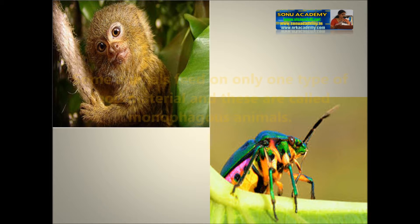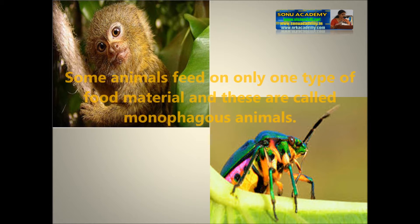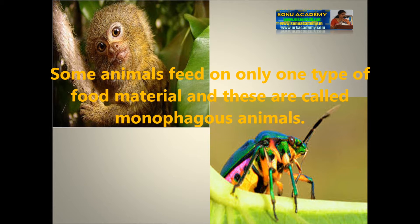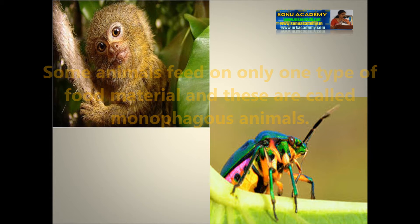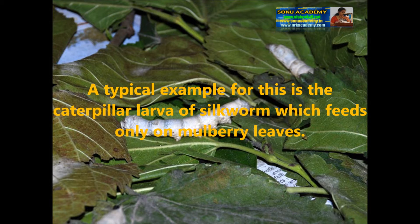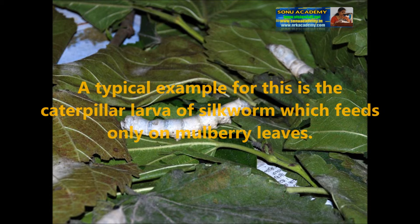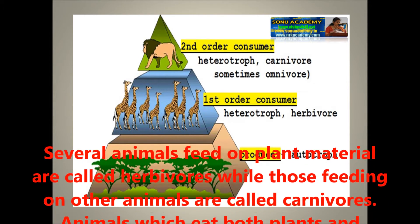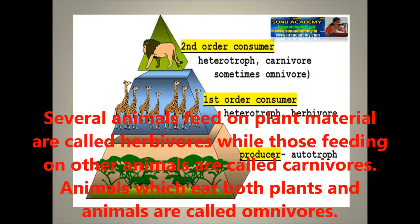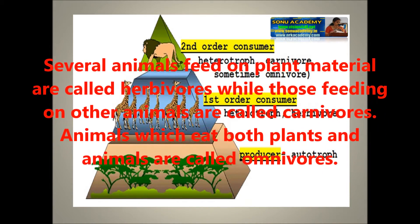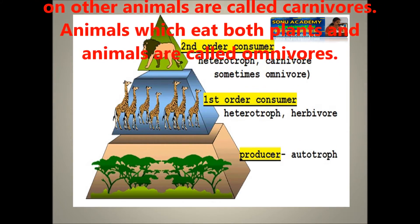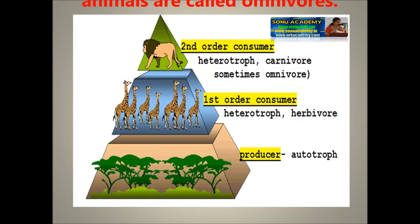Monophagous animals feed on only one type of food material — a typical example is the caterpillar larva of the silkworm, which feeds only on mulberry leaves. Animals that feed on a variety of food materials are called polyphagous. Animals that feed on plant material are called herbivores, those feeding on other animals are carnivores, and animals that eat both plants and animals are called omnivores.